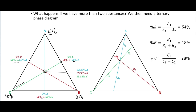Where all three lines meet in the center is 33.3% of each substance. To find an arbitrary point, we take the length A1 and divide by A1 plus A2, then multiply by 100 to get the percent — doing the same for the other two components. Those three values should add up to 100%.